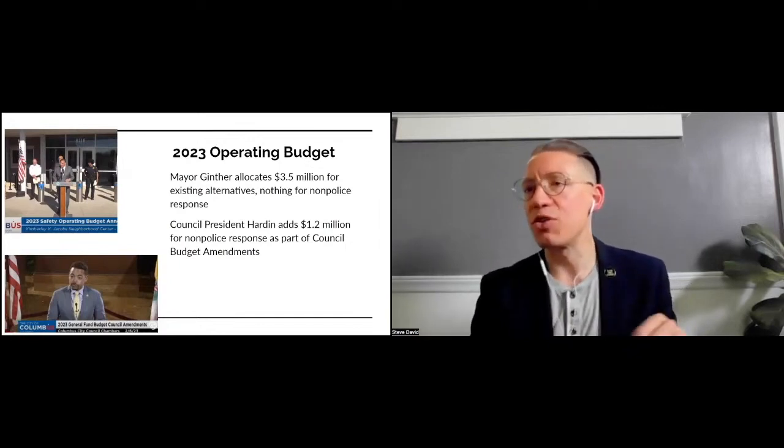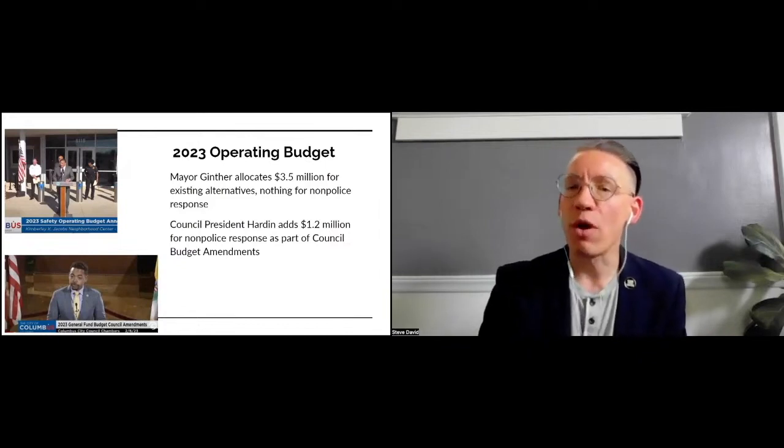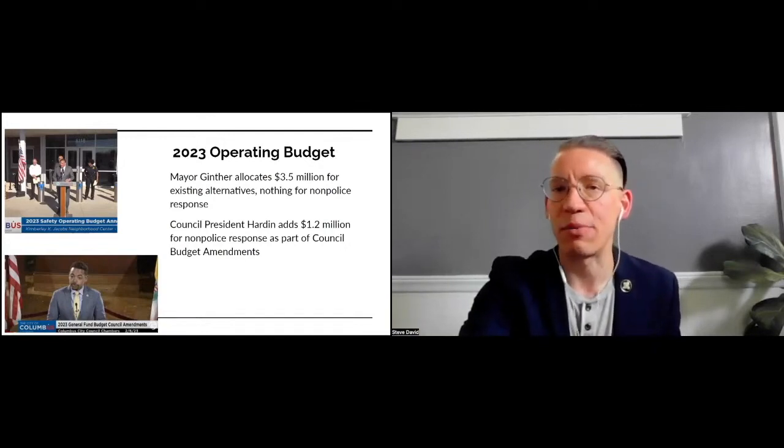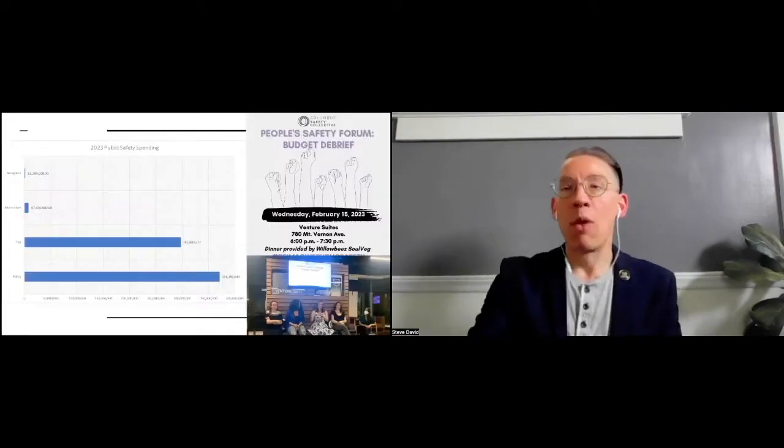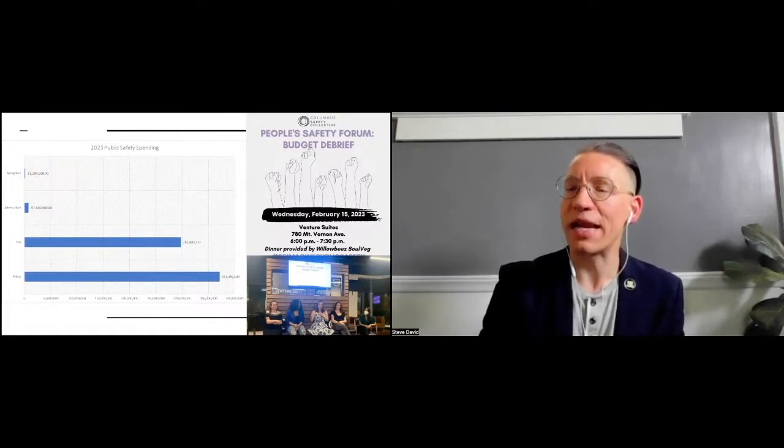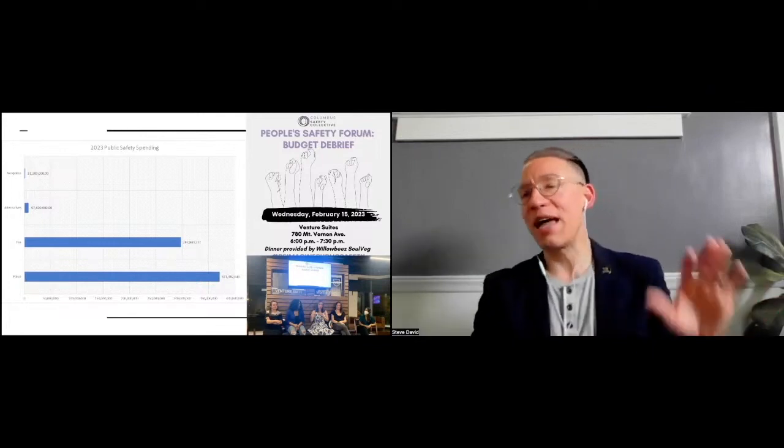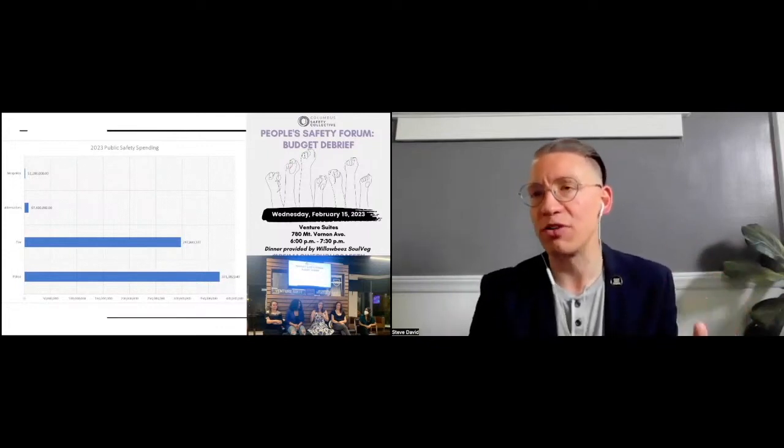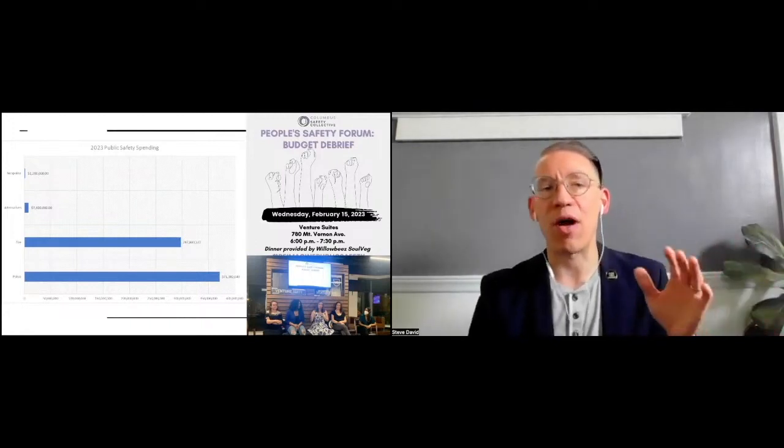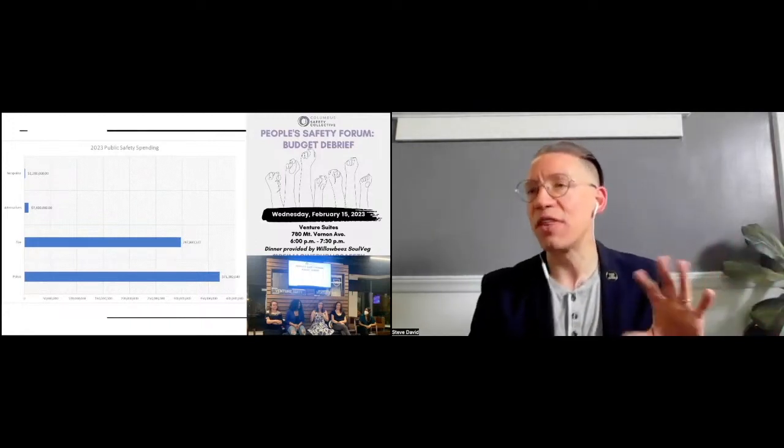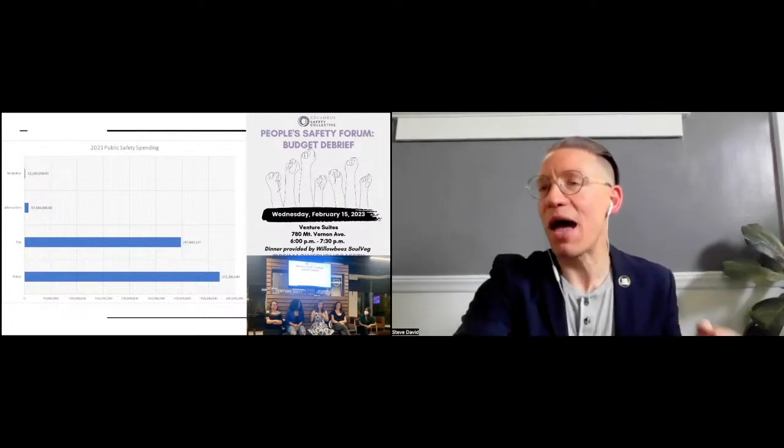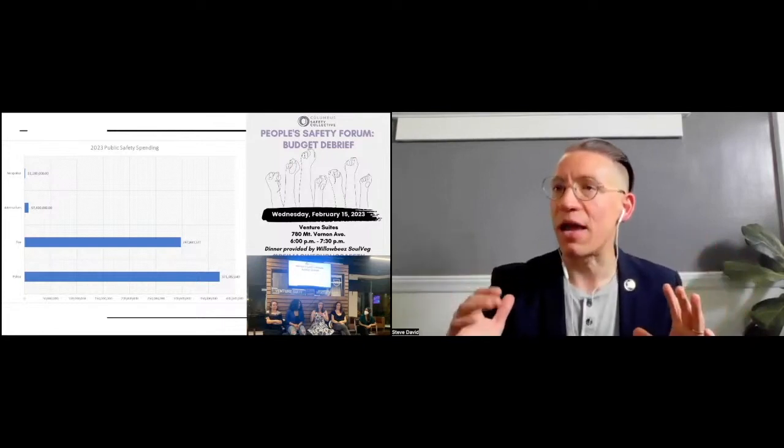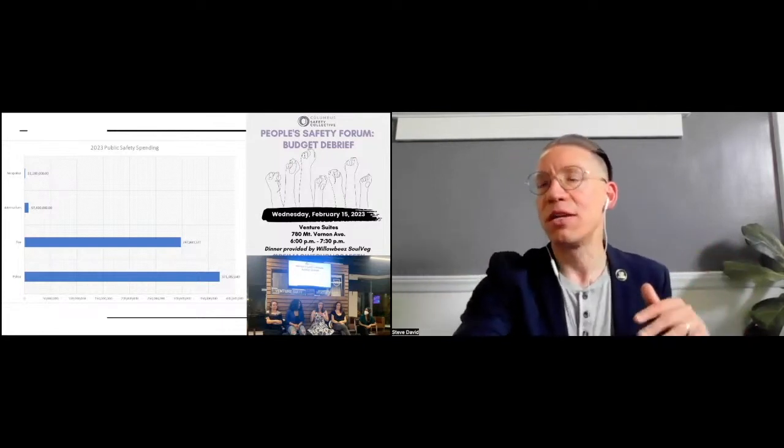But in the amendment process to the budget, our council president Shannon Hardin allocated $1.2 million to stand up a non-police response system as part of the additional money that council tacked onto our operating budget. We're really excited about that and about the possibility that it holds, but recognize the need to continue to engage the community in this process. So we held a budget debrief where we once again tried to make this case about how we're doing these investments. Police in this 2023 operating budget got $371 million as opposed to around 9 million that we have for our suite of alternatives. There's a lot of work for us to do as far as shifting our public safety services to be what the community wants.